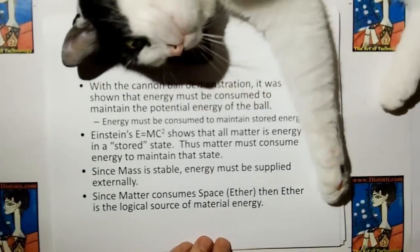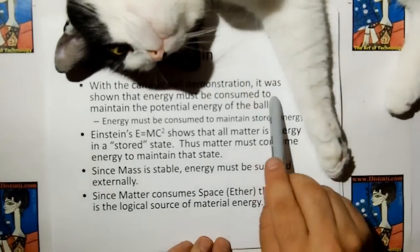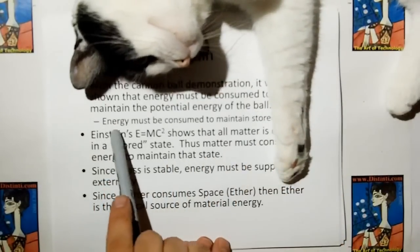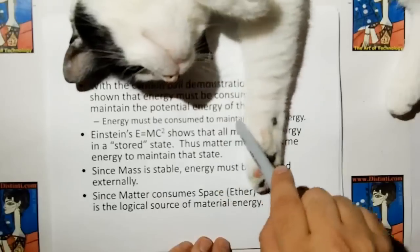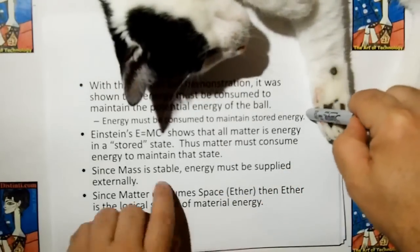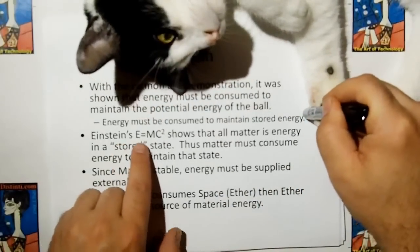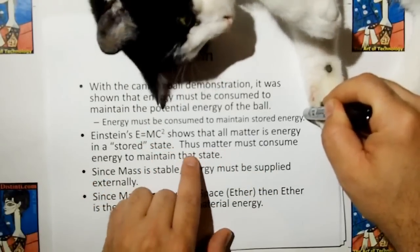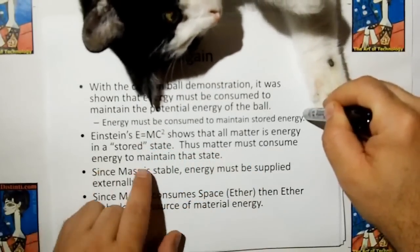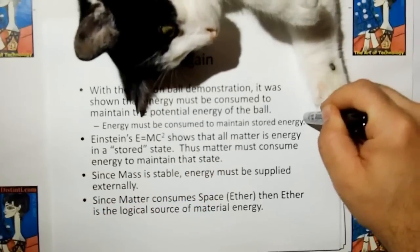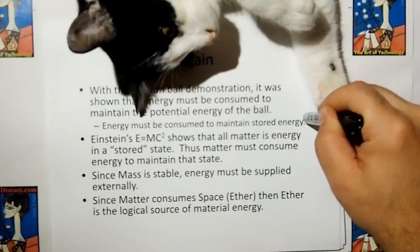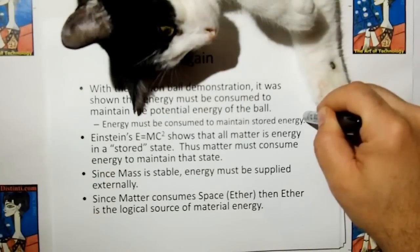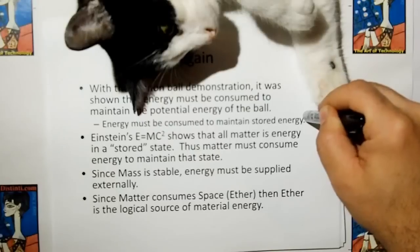With the cannonball demonstration, it was shown that energy must be consumed to maintain the potential energy of the cannonball. Energy must be consumed to maintain stored energy. Einstein's E equals MC squared shows that all matter is energy in a stored state; thus matter must consume energy to maintain that state. Matter is no longer a perpetual motion machine — matter has to consume energy to maintain its form.